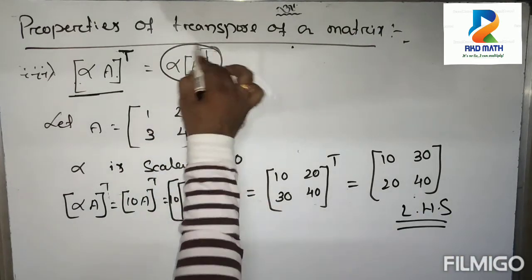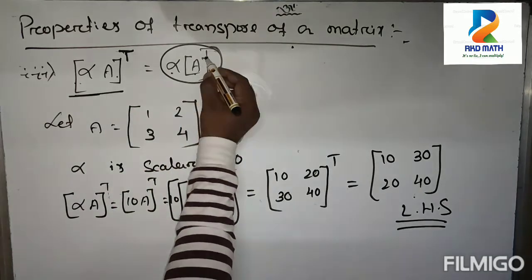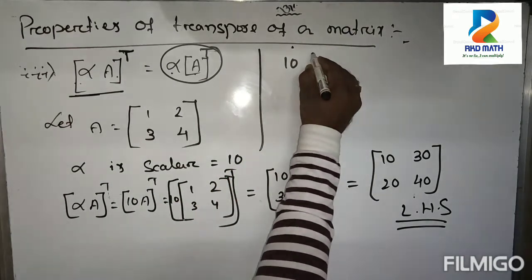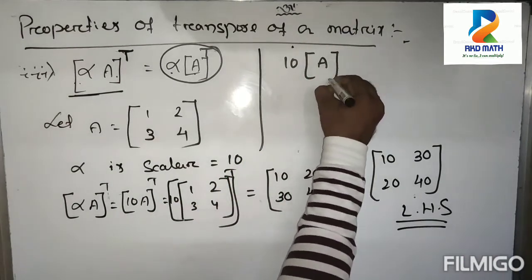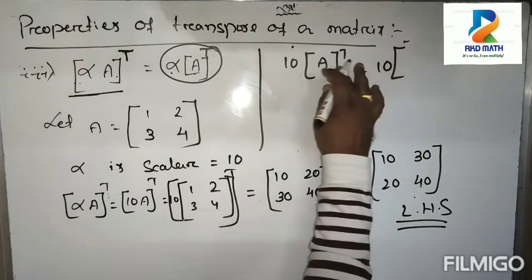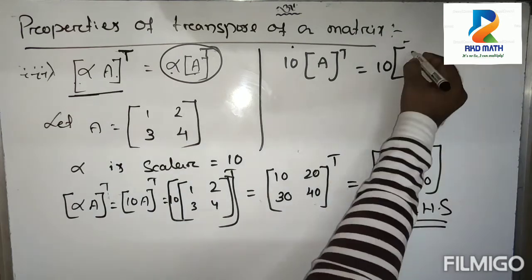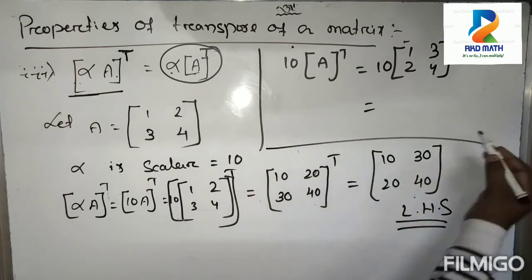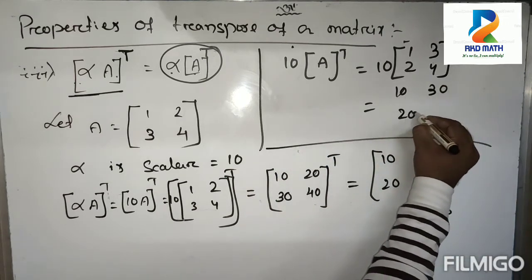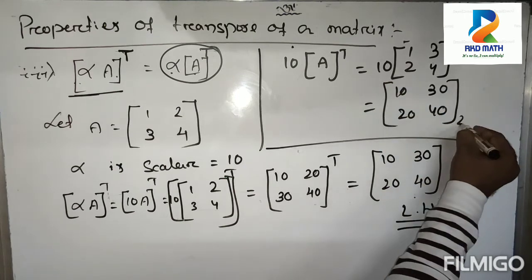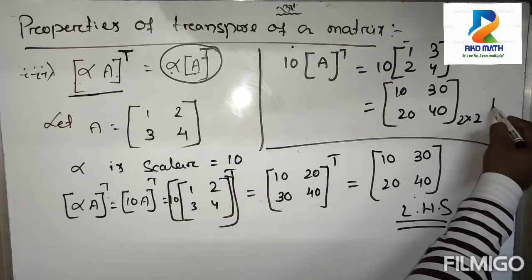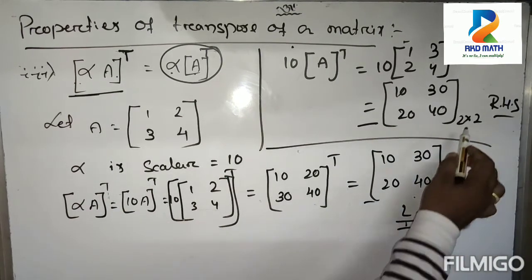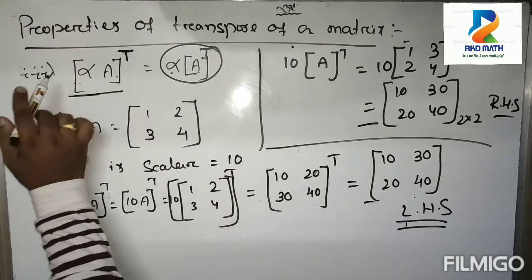For the RHS: alpha times A transpose equals 10 times the transpose of 1, 2, 3, 4. The transpose of 1, 2, 3, 4 gives 1, 3, 2, 4. Multiplying by 10 gives 10, 30, 20, 40. LHS equals RHS, so property number 3 is proved.